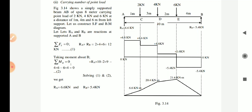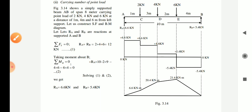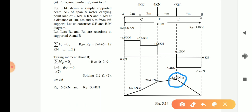Point number three: in every beam you will find a certain point where the shear force diagram will change its sign from positive to negative. Here at point E, you can see this is the point where the shear force diagram is changing its sign from plus 1.6 to minus 5.4. When the shear force changes its sign, it will pass through zero at that point, and at that point in the bending moment diagram you will get the maximum value.